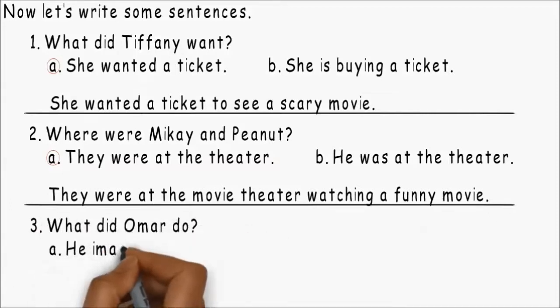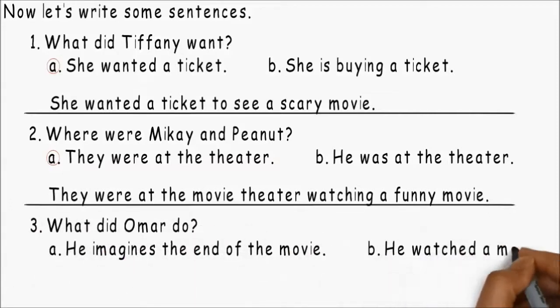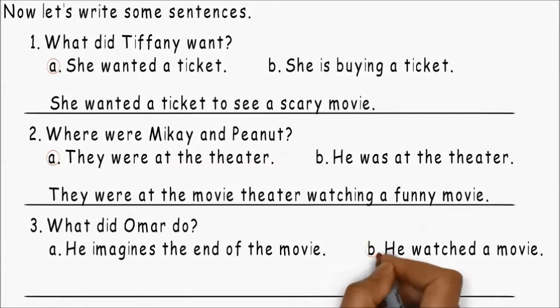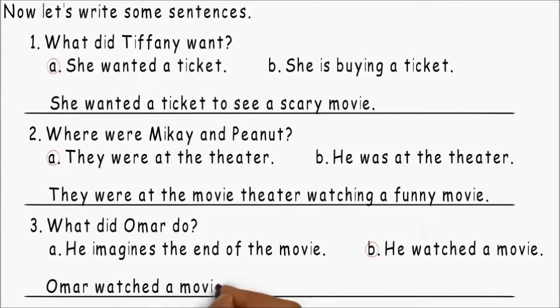Number three. What did Omar do? B, he watched a movie. What's our sentence? Omar watched a movie about baseball. Okay.